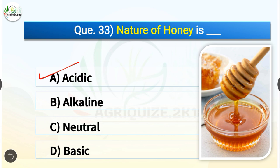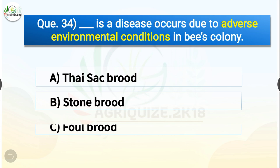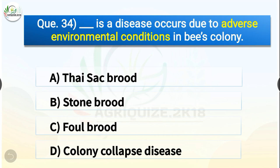Question number thirty-four: Dash is a disease occurring due to adverse environmental conditions in a bee colony. The options are chysal brood, stone brood, foul brood, or colony collapse disease. The correct answer is option D — colony collapse disease. Colony collapse disease is a disease occurring due to adverse environmental conditions in a bee colony.